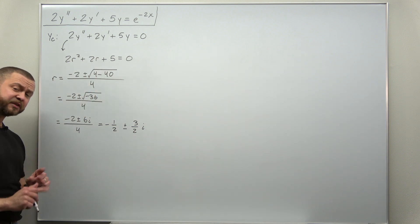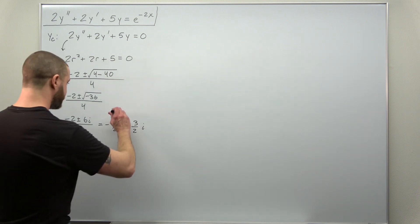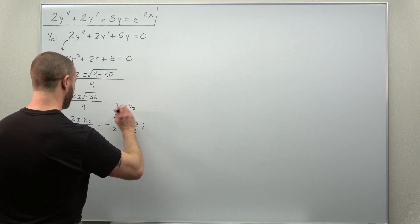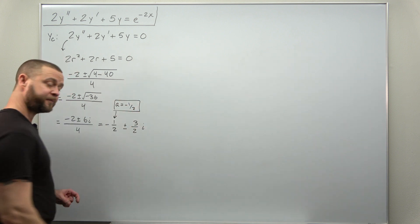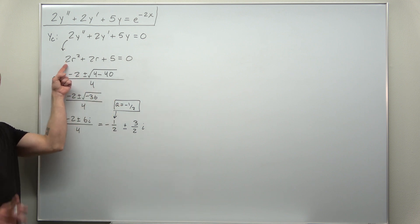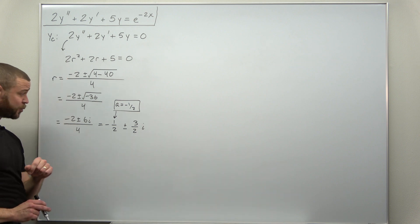Now in the case of complex roots to the characteristic equation, we identify the real part here where what we call a is negative 1 half. Be careful not to confuse a with the value of a in your quadratic expression here that we use for the quadratic formula.